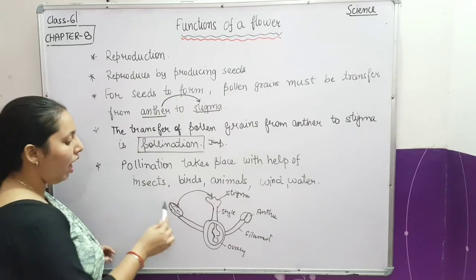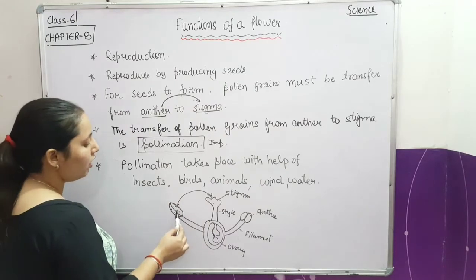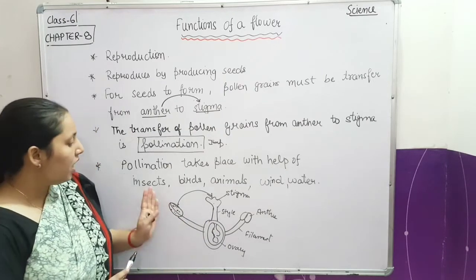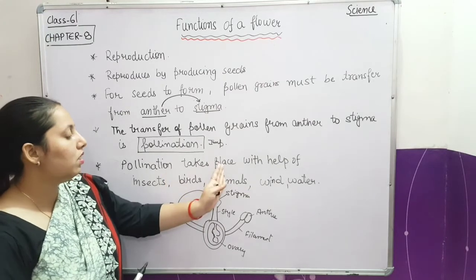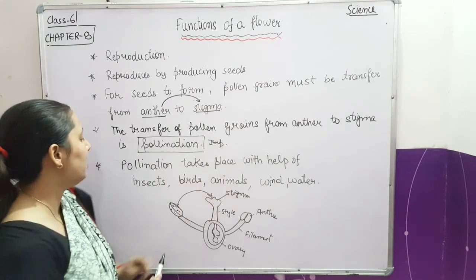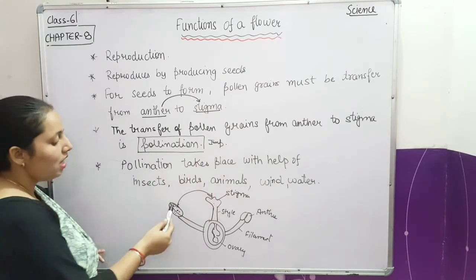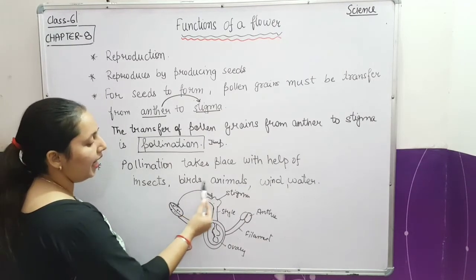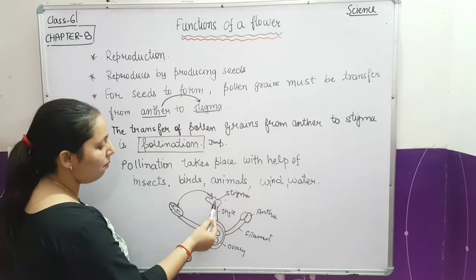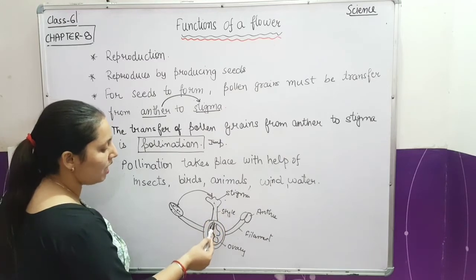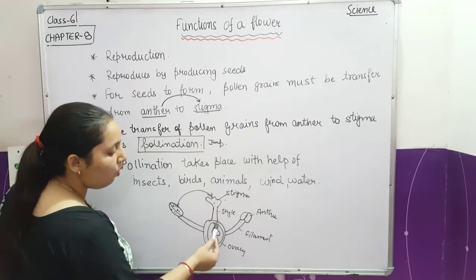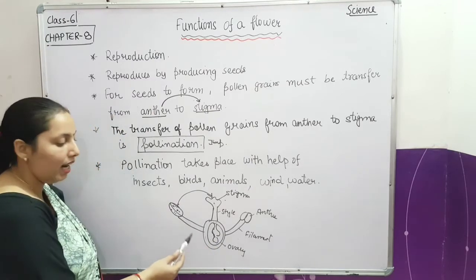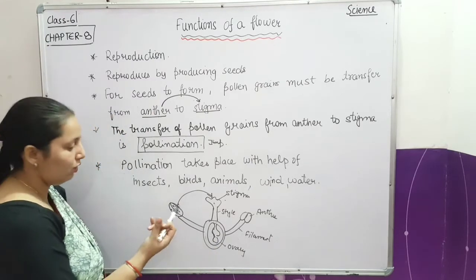How does this pollination happen? How are pollen grains transferred from anther to stigma? Pollination takes place with the help of insects. Some insects carry the pollen from the anther and take it to the stigma. From the stigma it goes through the style and then to the ovary, where the ovule is, and reproduction occurs.